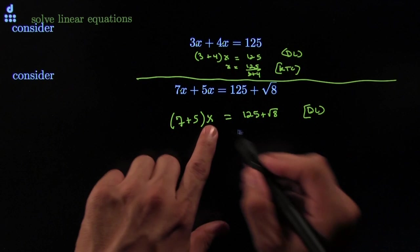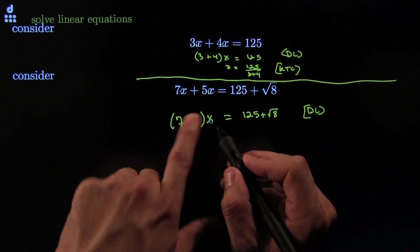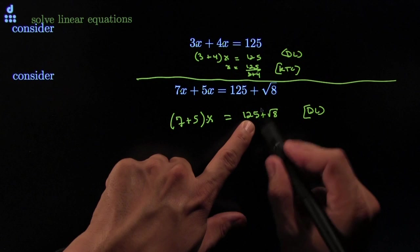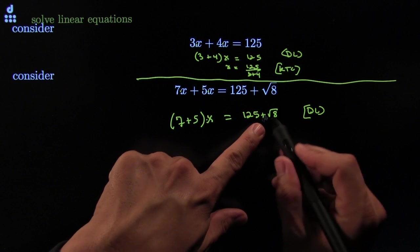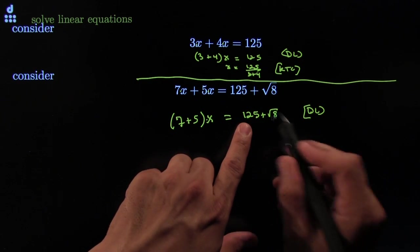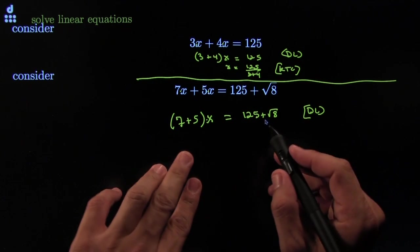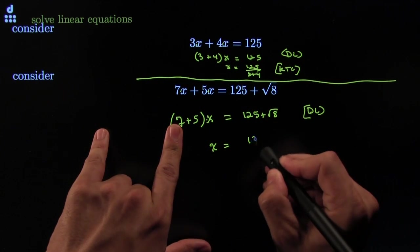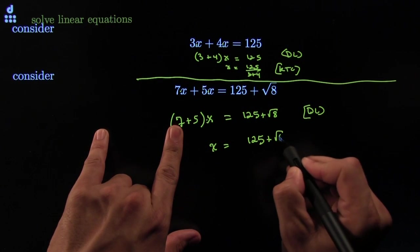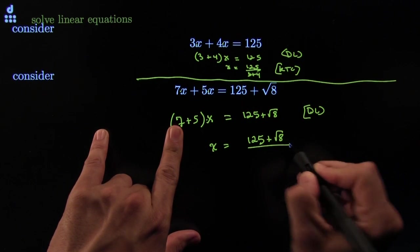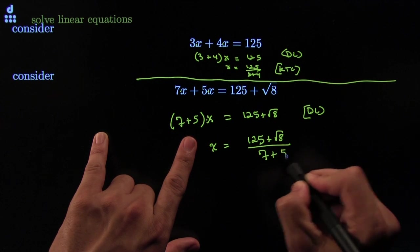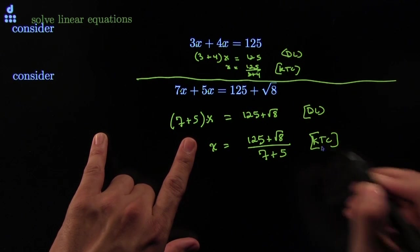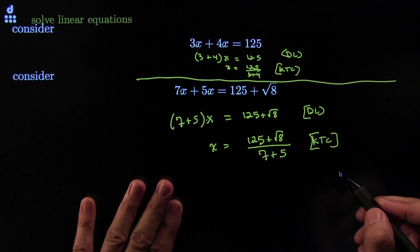Now you have one x, one coefficient stuck to it by multiplication, and some x-less stuff on the right-hand side — no x's. So therefore, I can just kill the coefficient: 125 plus the square root of 8, all over 7 plus 5. Kill the coefficient. Money.